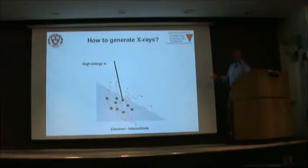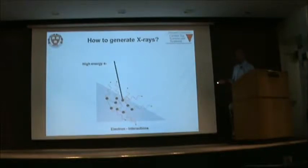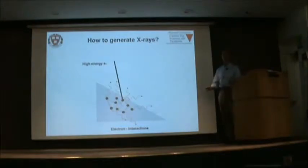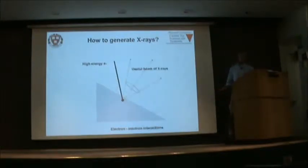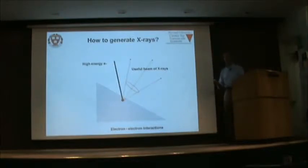When a high-energy electron hits the metal target, it's not just one interaction — it will do many interactions with the atoms in the metal until it loses all its energy. From one electron, a lot of heat is generated but also many photons. The higher the energy, the more photons and more energetic photons will be coming out. We use this conical-shape X-ray beam coming from a point source to illuminate our sample for imaging.